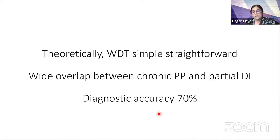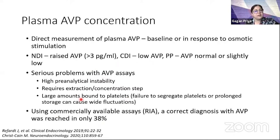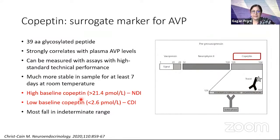Diagnostic accuracy of the water deprivation test in studies has been only about 70%, meaning we need other measures. Plasma AVP concentrations — raised levels favor nephrogenic DI, very low levels favor central DI — but there are several problems with arginine vasopressin assays that make them commercially non-viable, so plasma AVP measurements have not picked up in clinical practice.